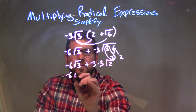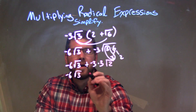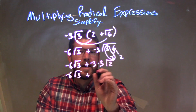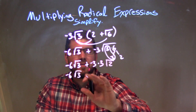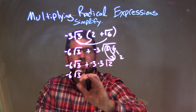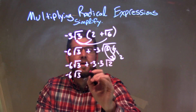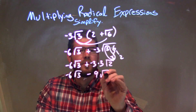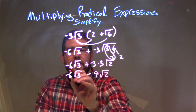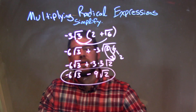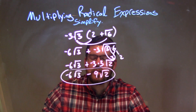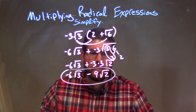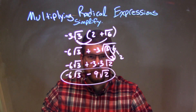We have negative 6 square root of 3 right there, plus negative 3 times 3 is negative 9, so since this is a negative 9, we're just making a minus here. So we have a minus and 9 times the square root of 2 is left over. Our final answer is negative 6 times the square root of 3 minus 9 times the square root of 2.